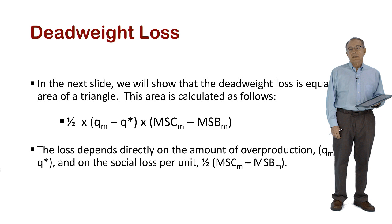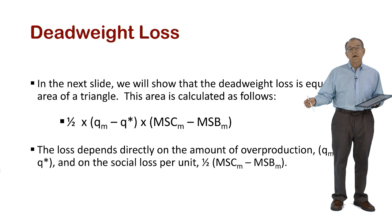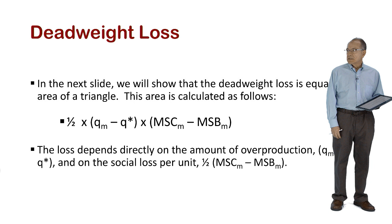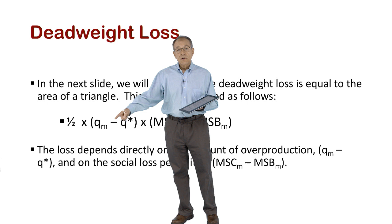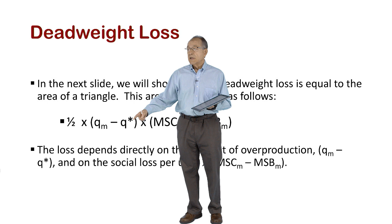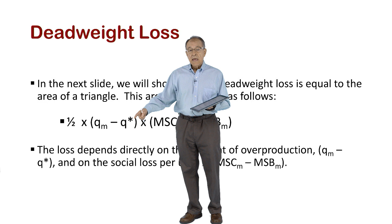Let's turn to deadweight loss and how we calculate it. Here is a formula for calculating deadweight loss. The first term in parentheses is the difference between the market equilibrium output Q_m and the socially optimal amount of production Q*. The difference is positive because we have overproduction, and deadweight loss increases the larger the extent of overproduction.